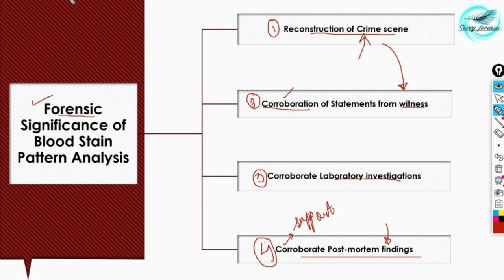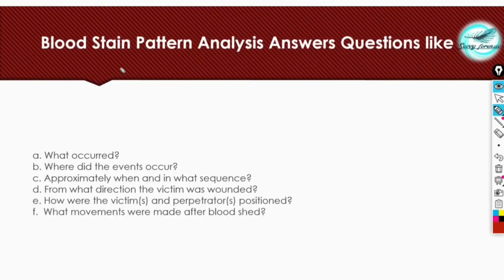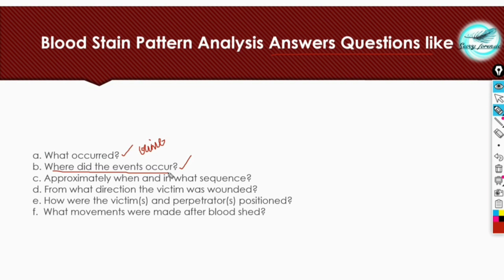Bloodstain pattern analysis provides answers to questions like: what occurred — what kind of crime took place, seen through spatter stain analysis; and where the events occurred — through bloodstain pattern analysis we can find exactly where the event took place, using the area of origin studied in the previous video.